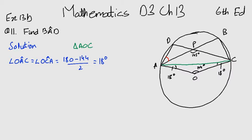You can see that angle OAC and angle OCA are equal, and the values come out to be 18 degrees. They are equal because this is an isosceles triangle. Two sides of it are equal, OA and OC, because they are the radius.